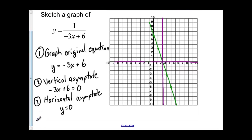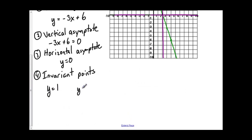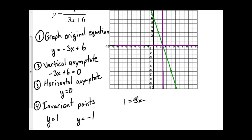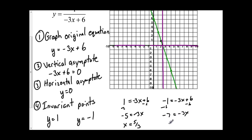Now the last thing I need is the invariant points — points that are going to be part of both the reciprocal graph and the original function. These two points always happen at y equals 1 and y equals negative 1. I can calculate them using my original equation: 1 equals negative 3x plus 6 gives me negative 5 equals negative 3x, so x equals 5 over 3. For negative 1: negative 1 equals negative 3x plus 6 gives me negative 7 equals negative 3x, so x equals 7 over 3.